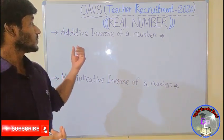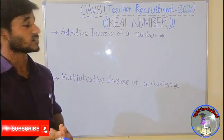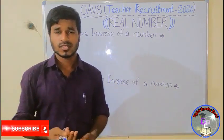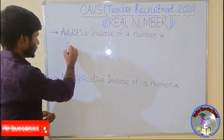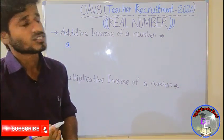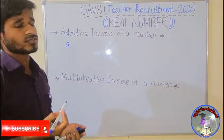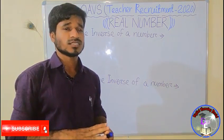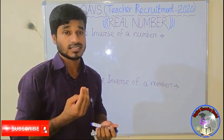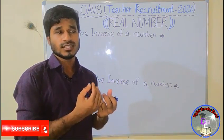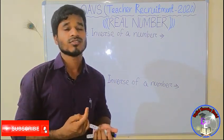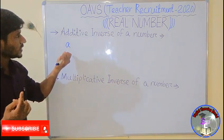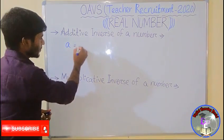Then we will discuss the properties of rational numbers. The first property is additive inverse of a number. Suppose we consider a number, let it be a. What is the additive inverse of a? Additive inverse means a change in the sign — if we have a plus sign, it converts into minus sign, and if we have a negative sign, it converts into positive sign. So the additive inverse of a will be minus a.